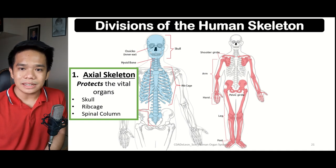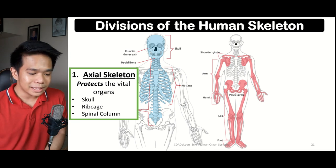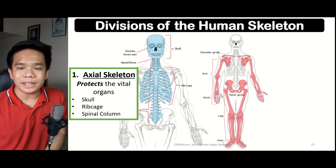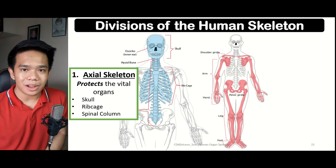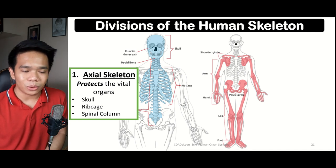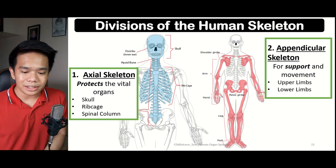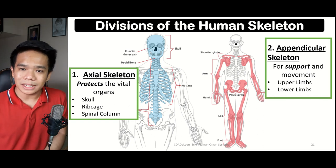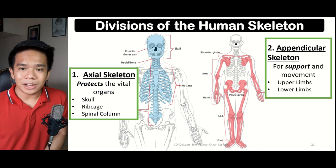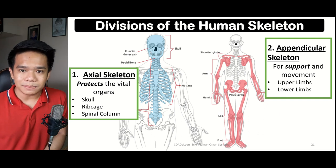We have the skull, which is responsible for the protection of the brain as well as other sense organs such as the eyes, the tongue, and the ears. Then we have the ribcage, which protects the heart and the lungs. And we have the spinal column, which helps for the protection of the spinal cord. On the other hand, we have the appendicular skeleton, which helps for the support and movement of the body. The term appendicular is connected to the word appendages, meaning it is found within the sides of the body, comprising both the upper limbs and the lower limbs.